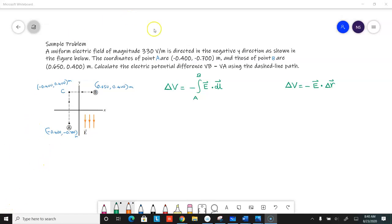Here's a problem asking you to calculate the potential difference between two points A and B. In particular, they want VB minus VA. The electric field is downward in the negative y direction, has a magnitude of 330 volts per meter, and the coordinates of points A and B are given. They want us to calculate using the dashed line path.